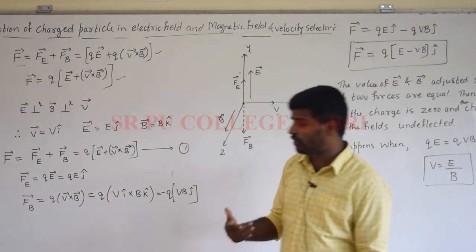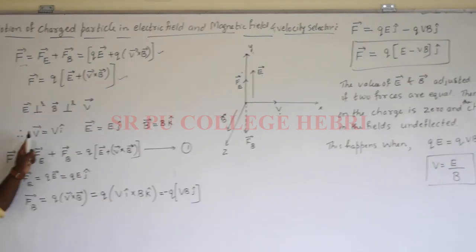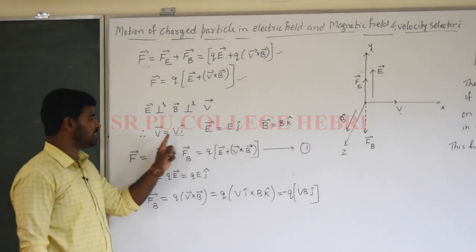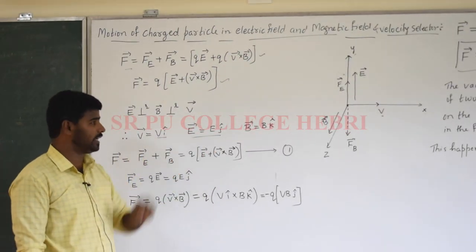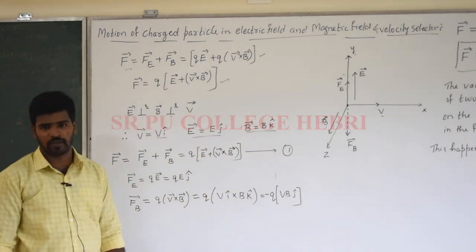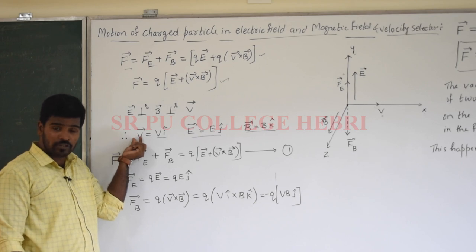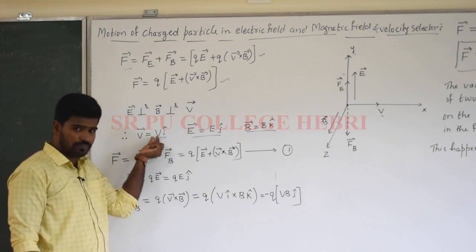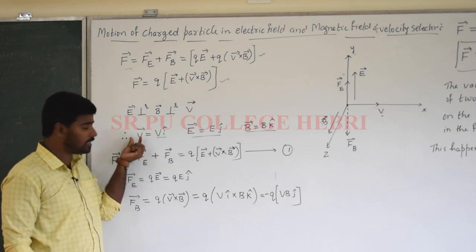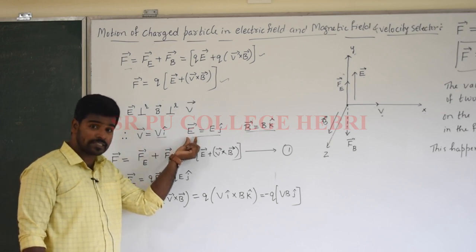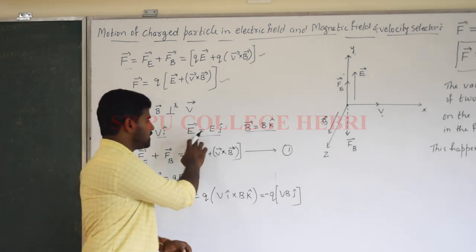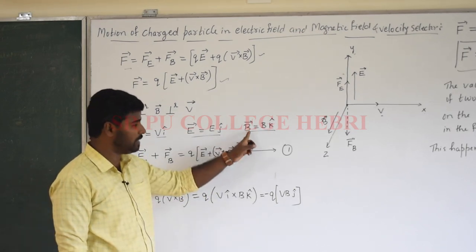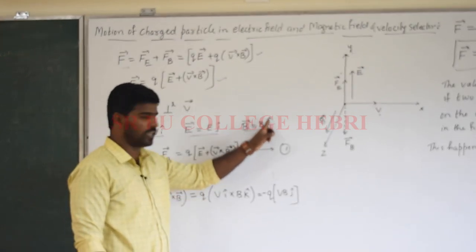With respect to the coordinates, V vector = V i-cap, since velocity is along the x-axis with unit direction i-cap. The electric field E vector = E j-cap, since the electric field is along the y-axis with unit direction j-cap. The magnetic field B vector = B k-cap, since the magnetic field is along the z-axis with unit direction k-cap.